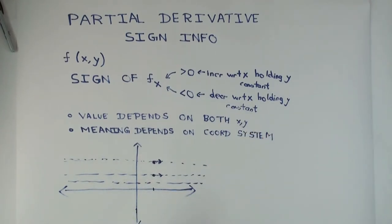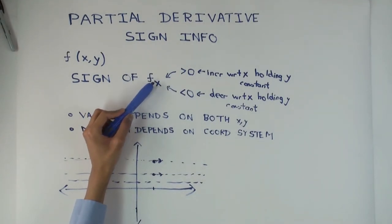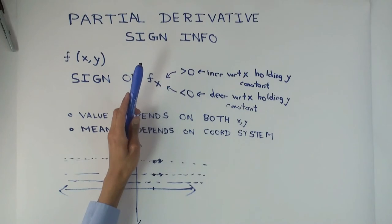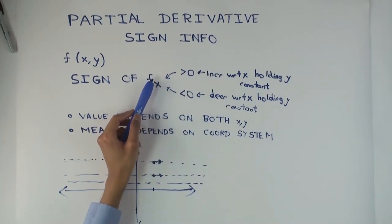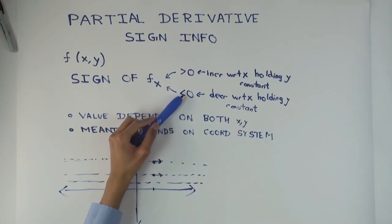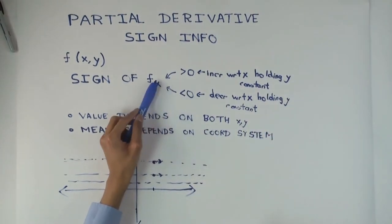Usually when you have a law in economics — like the law of demand — it basically says that as the price increases, the quantity demanded decreases. So if f is the demand function and x is the price, then this derivative is less than zero for an ordinary demand curve. What the law of demand actually says is something much stronger: ceteris paribus, everything else held constant, this is less than zero — and whatever the values of the other variables, the fact that this is less than zero won't change.